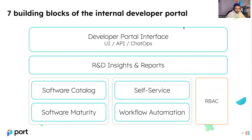There are a couple of building blocks to an internal developer portal. We're going to focus more on the software catalog, but to give a quick overview: software catalog is definitely one of them. The second is the self-service part, where you can allow developers to act upon the catalog and consume self-service actions like scaffolding a microservice, creating a development environment for five days, or adding an environment variable to a service. Software maturity is another important pillar where you can embed your organizational standards for development and make sure they're being met — using scorecards, you can certify your software in terms of production readiness, security, privacy, and compliance.